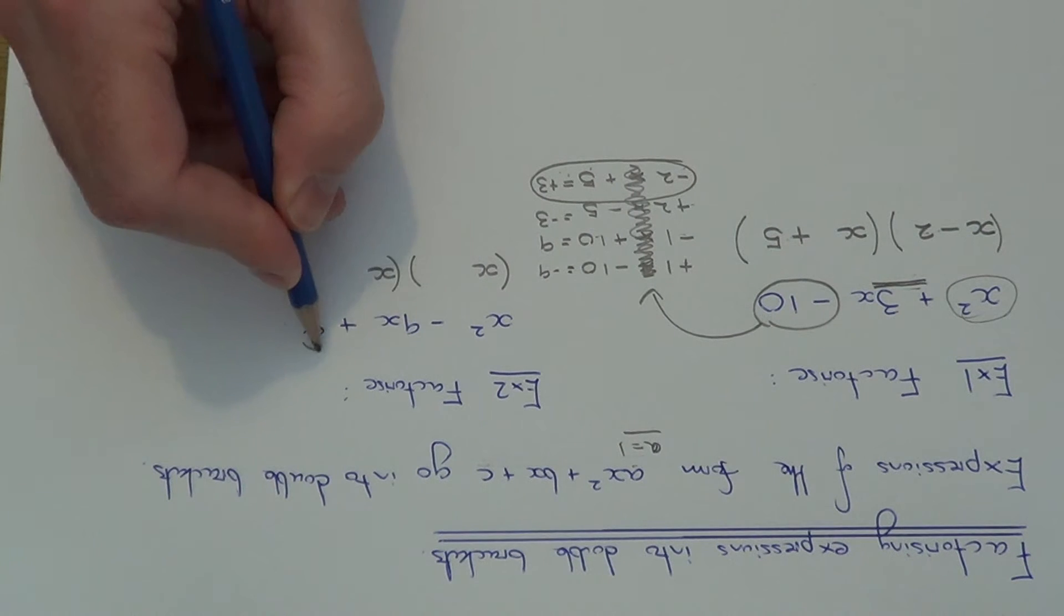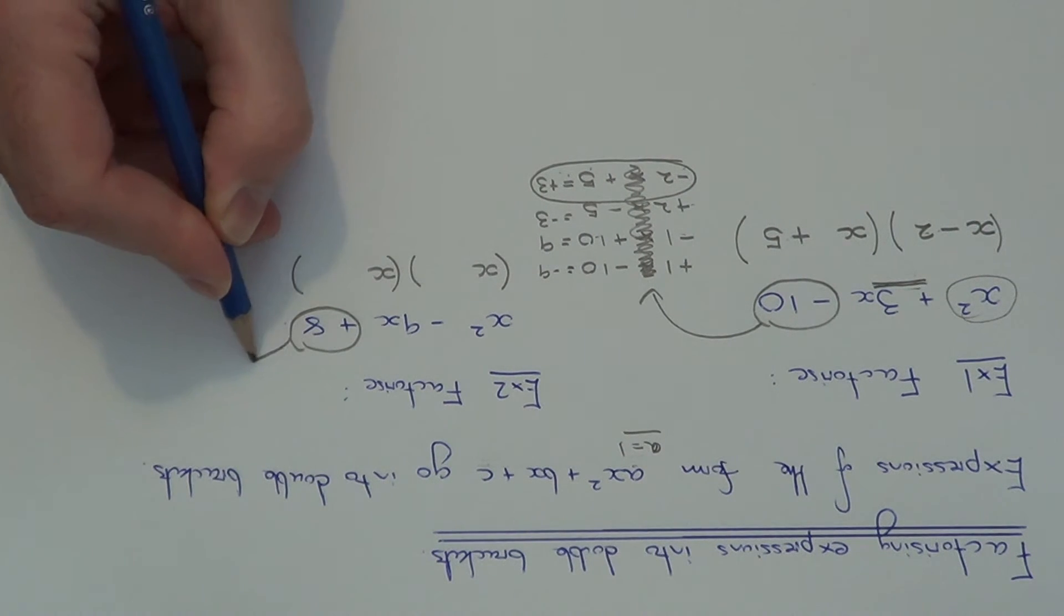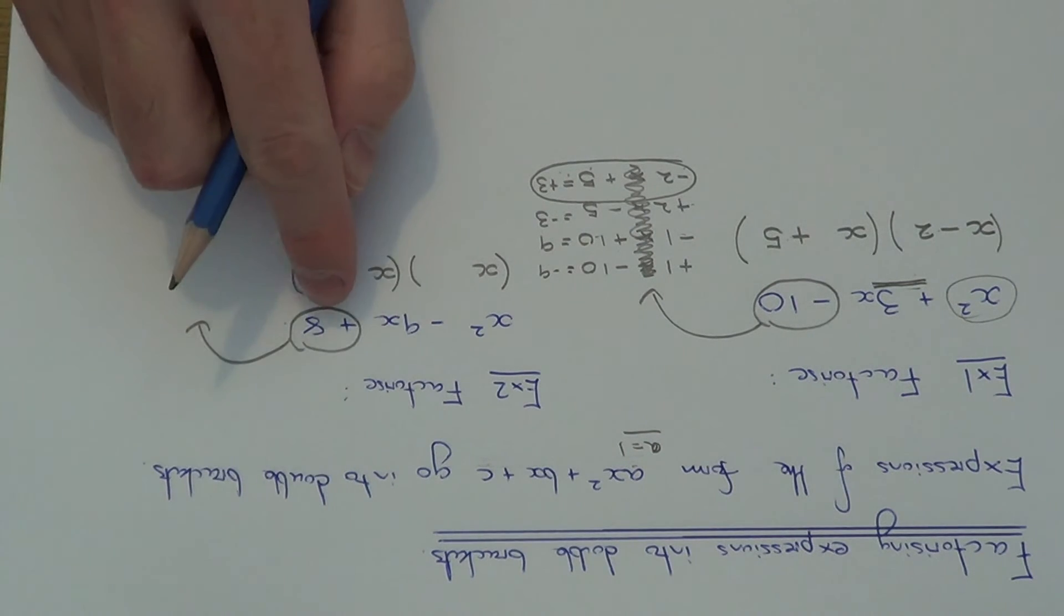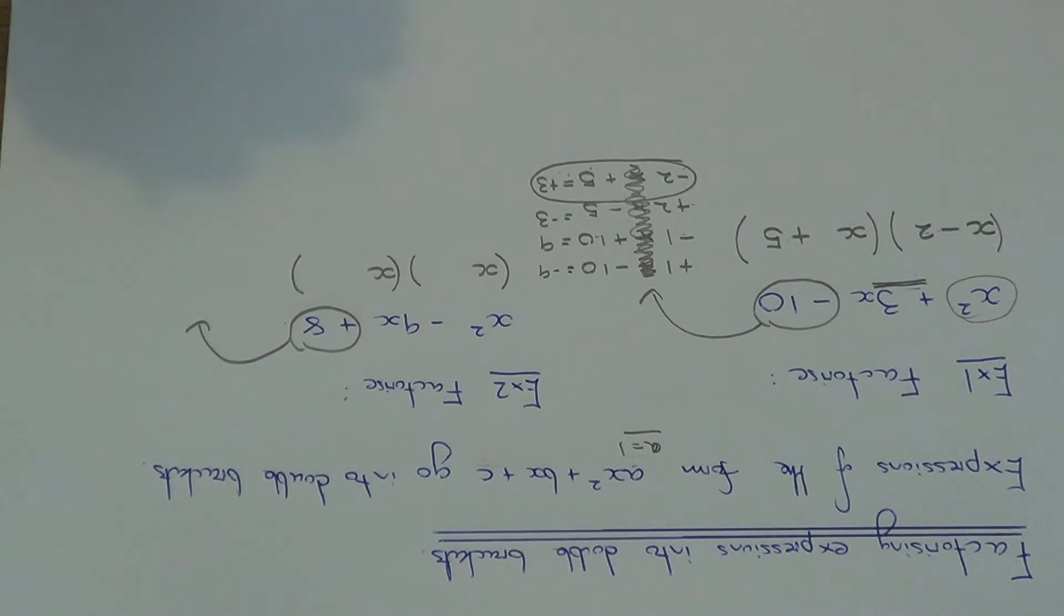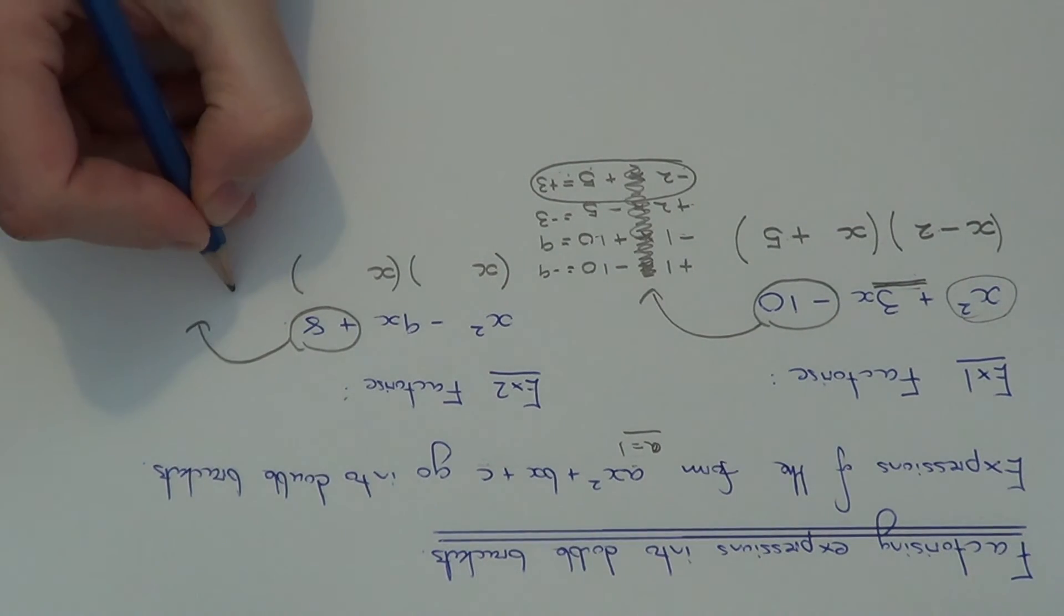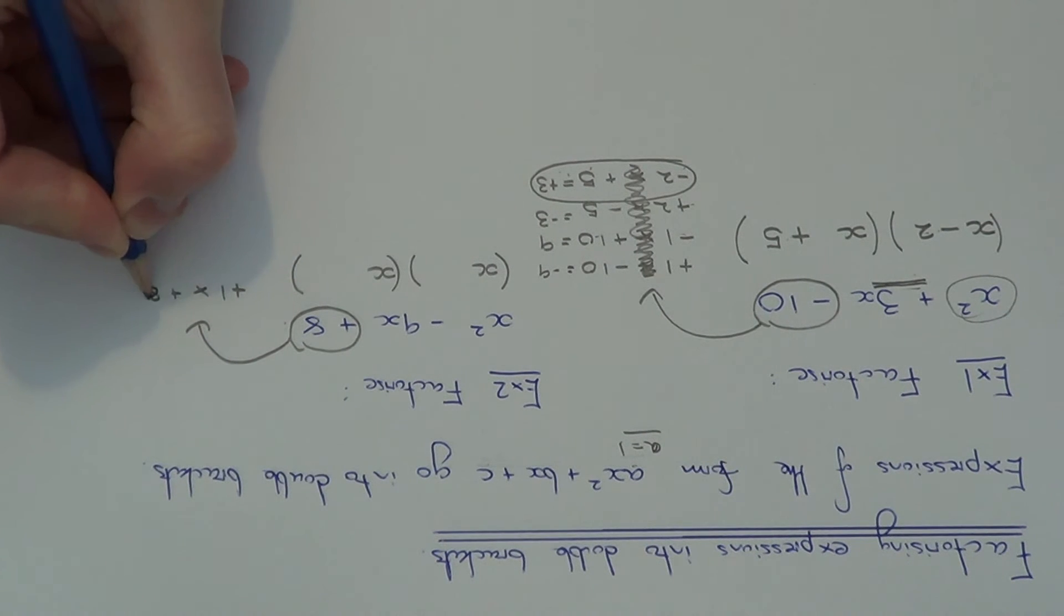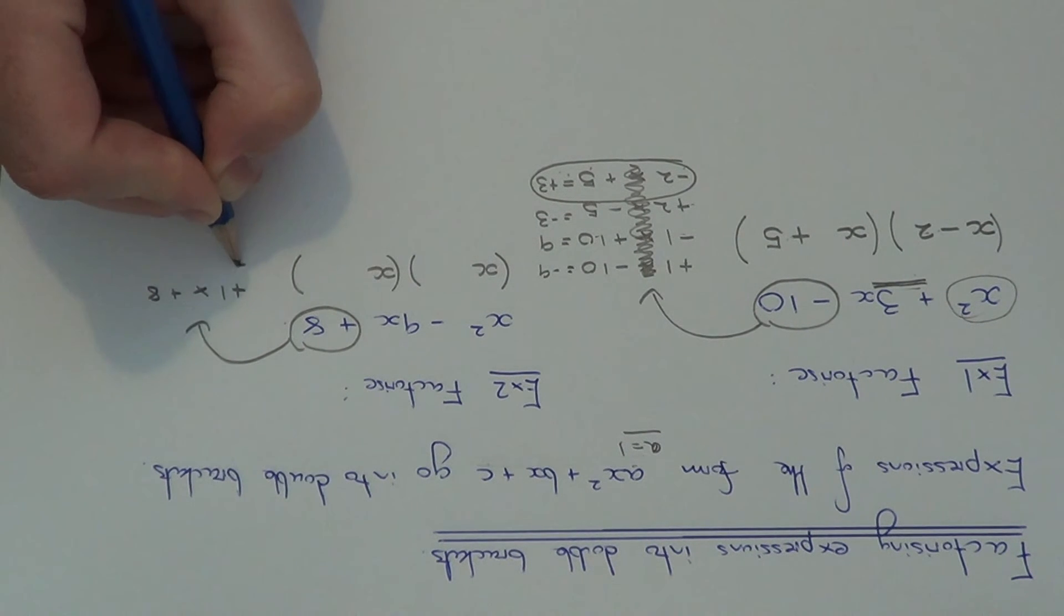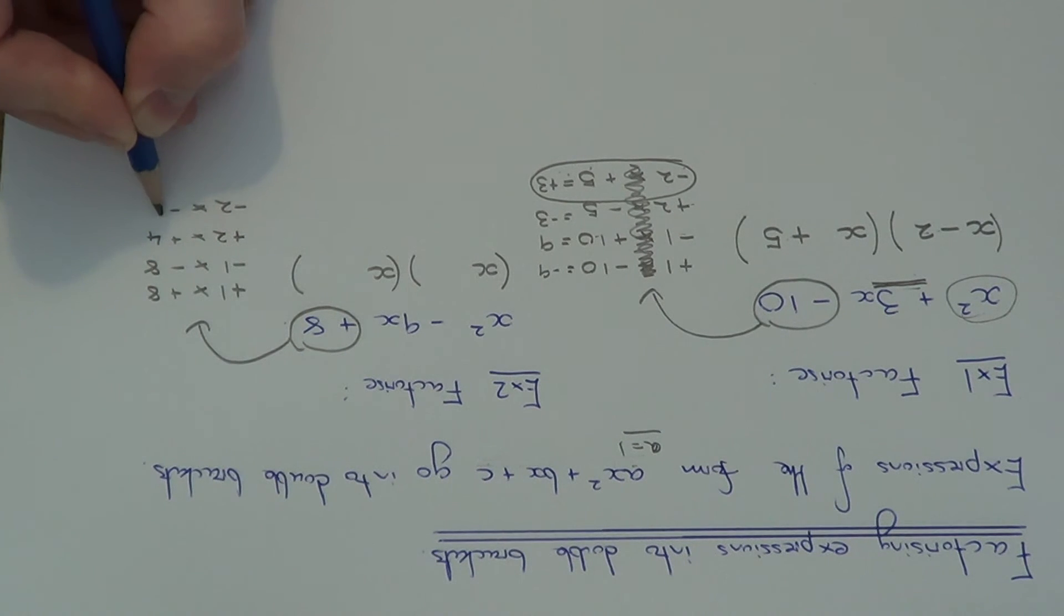So the next thing you do is look at the number at the end, which is plus 8, and write down all your factor pairs of plus 8. So be careful on this one, because it's positive 8, so the pairs of numbers must have the same sign to give us plus 8. So we could have plus 1 times plus 8, or it could be minus 1 times minus 8. Remember, 2 negatives make a positive. The other pair could be plus 2 times plus 4, and the final pair is minus 2 times minus 4.